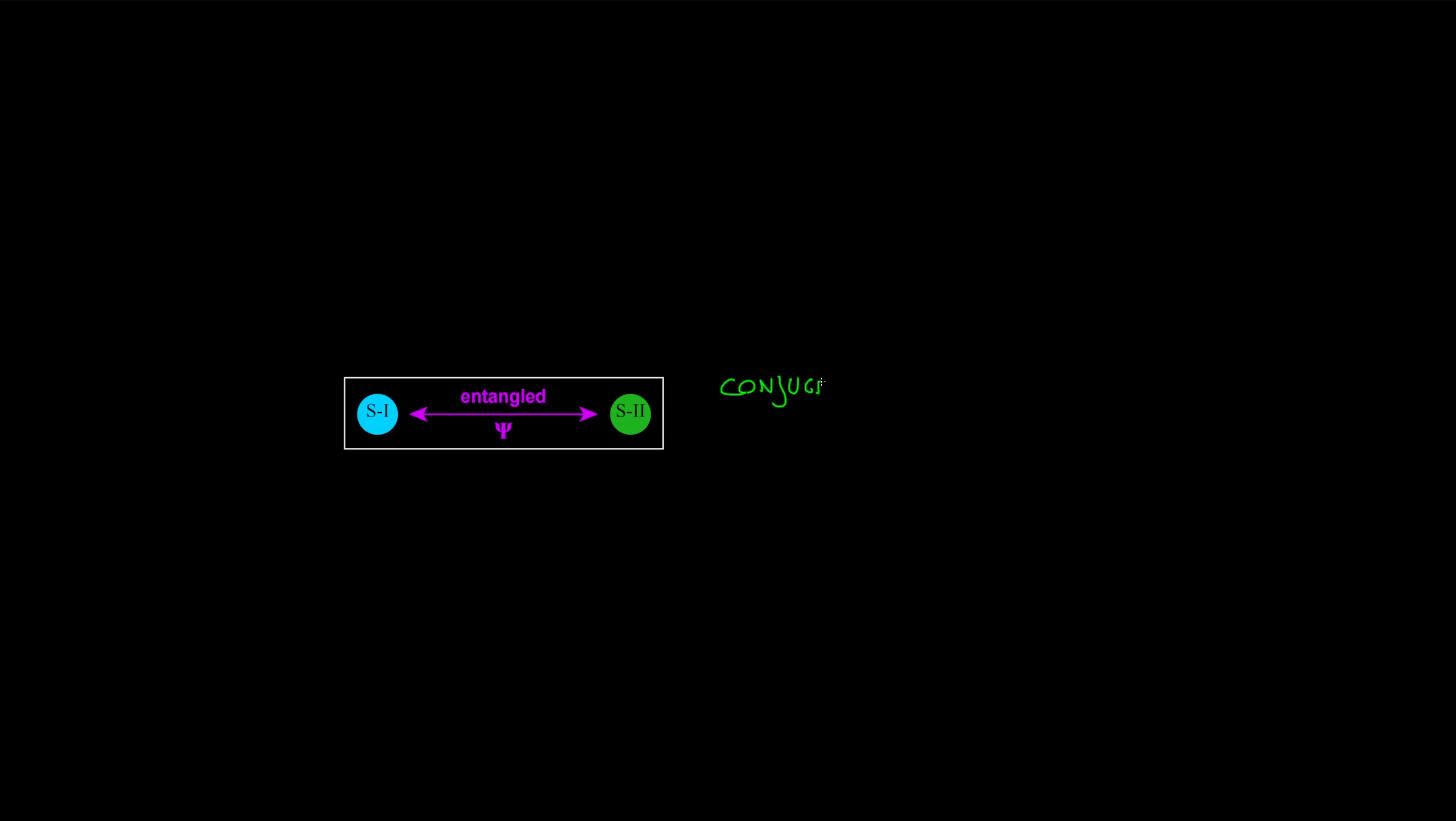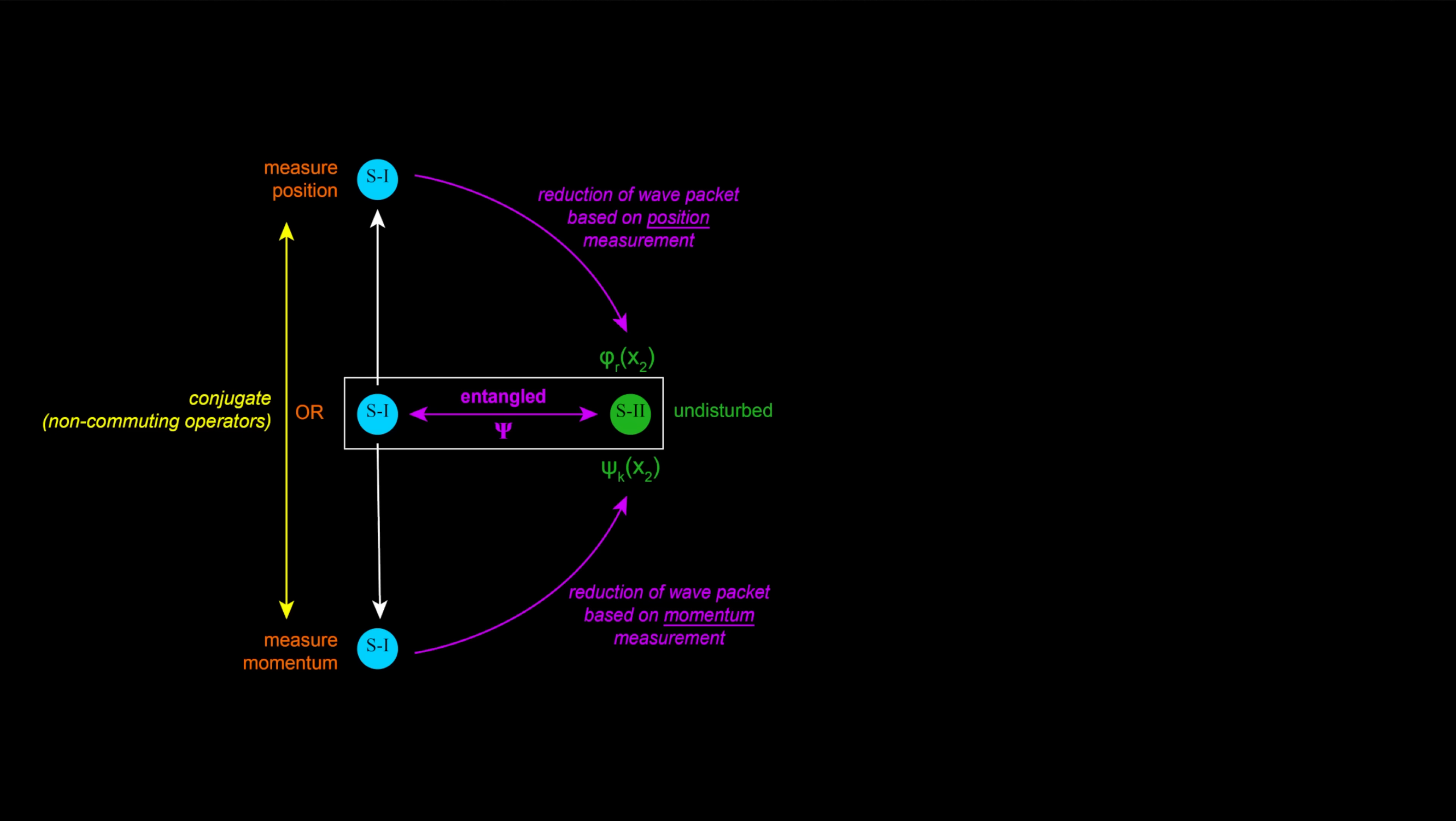Einstein, Podolsky and Rosen were questioning the newborn quantum mechanics for its chronical incompleteness. Here they focus especially on conjugated momentum position in entangled systems to expose their critics. Leaving System 2 undisturbed, they hypothesize the measurement of position or its conjugate momentum in System 1. This measurement changes the wave function describing the entangled system, but since the wave function should entirely describe the system, it means that an arbitrary choice on System 1 should affect what is real in System 2.